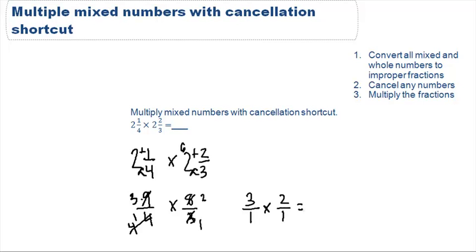When we multiply our fractions straight across like step 3 says, we have 6 over 1, also known as 6. The answer to 2 and 1 fourths times 2 and 2 thirds is 6.